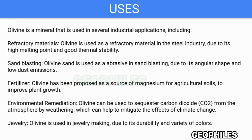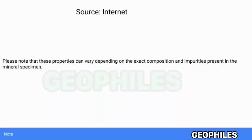Jewelry: Olivine is used in jewelry making due to its durability and variety of colors. Please note that these properties can vary depending on the exact composition and impurities present in the mineral specimen.